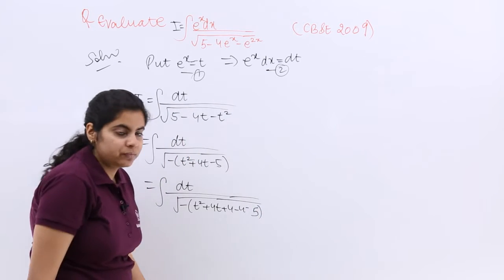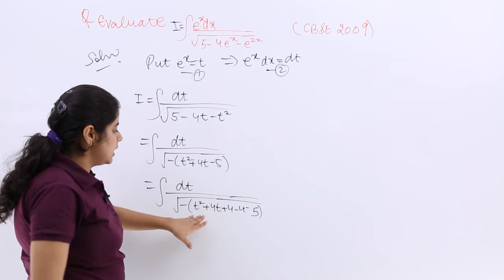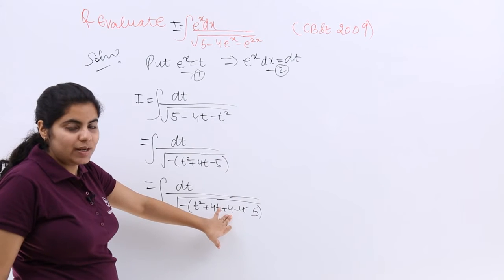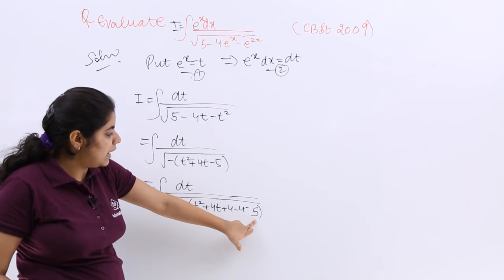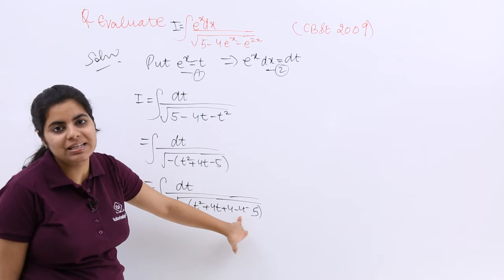So now what to do? Now I have simply t square plus 4t plus 4 which can be made t plus 2 whole square minus 5 minus 4 means minus 9.